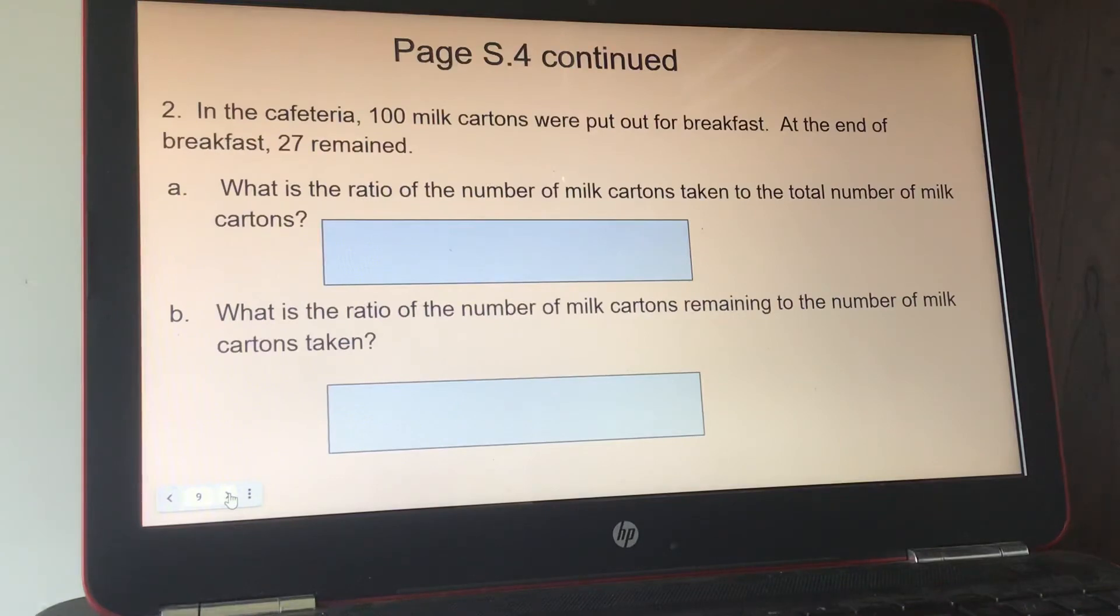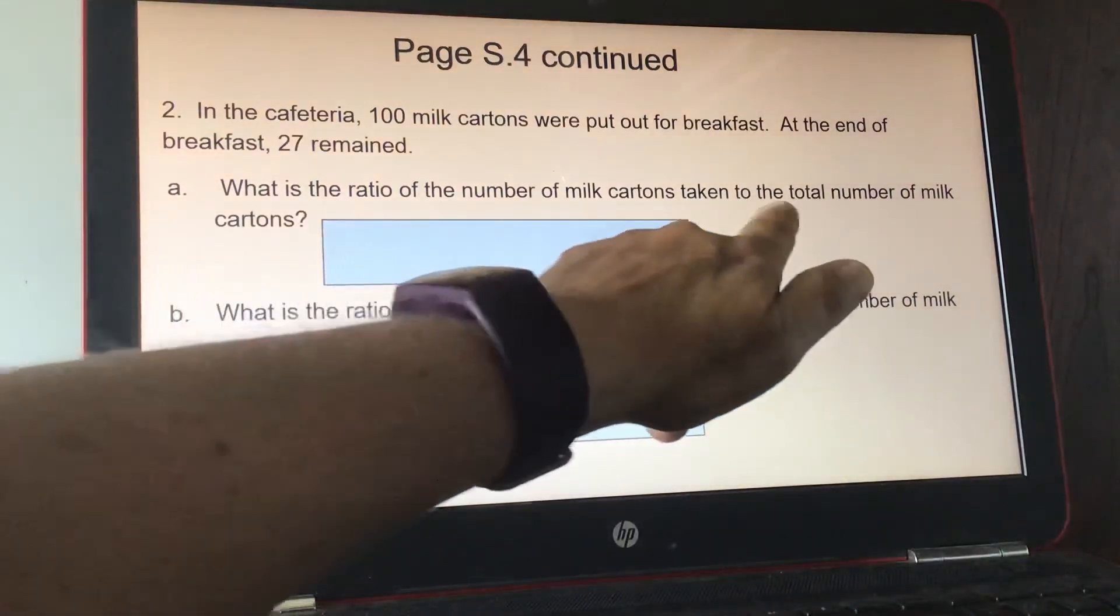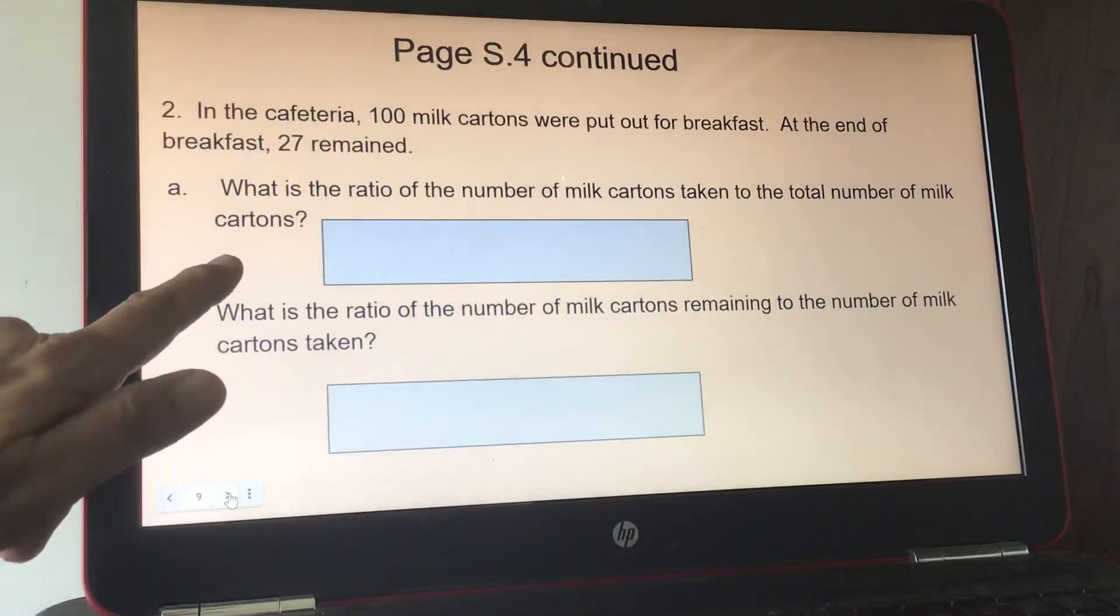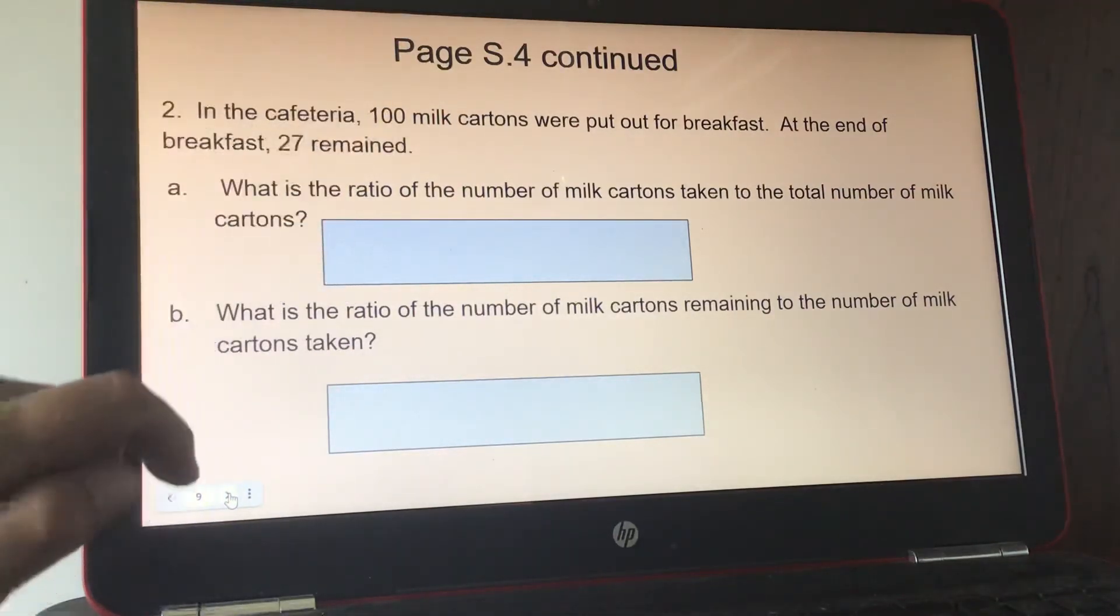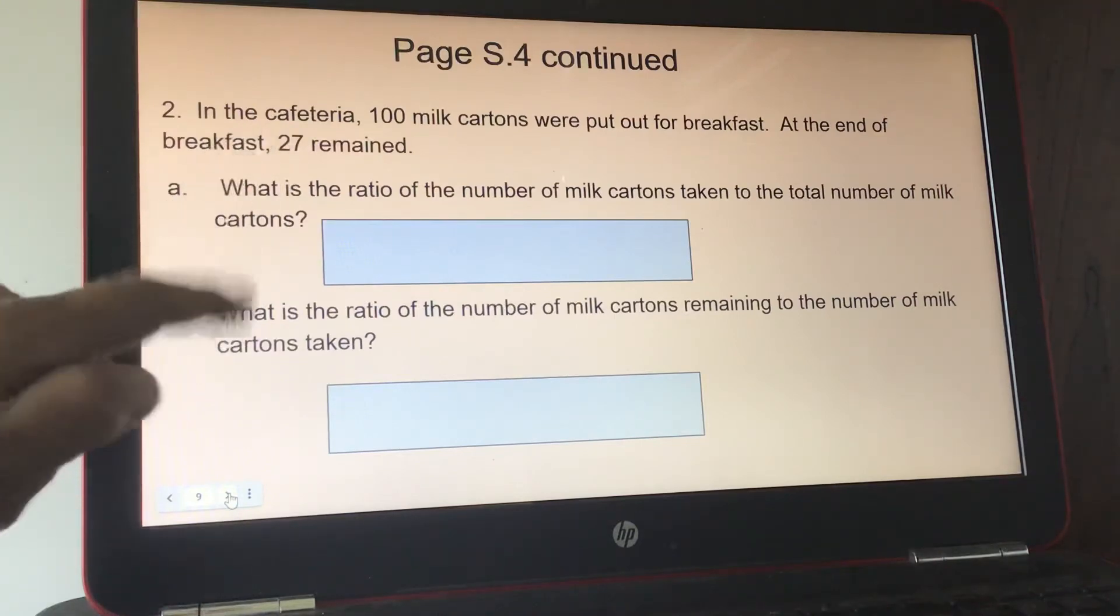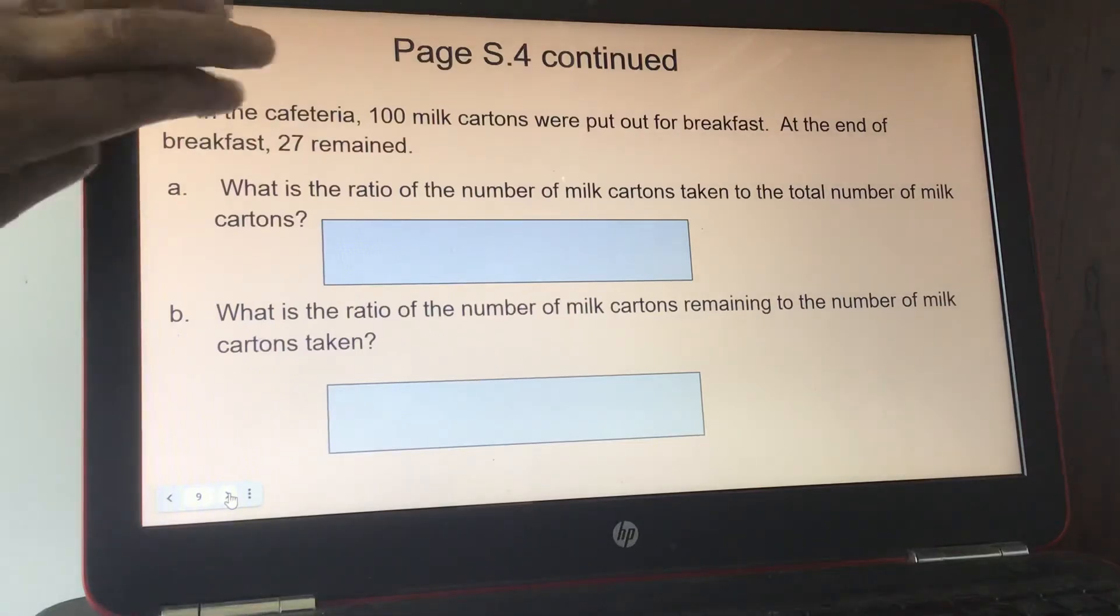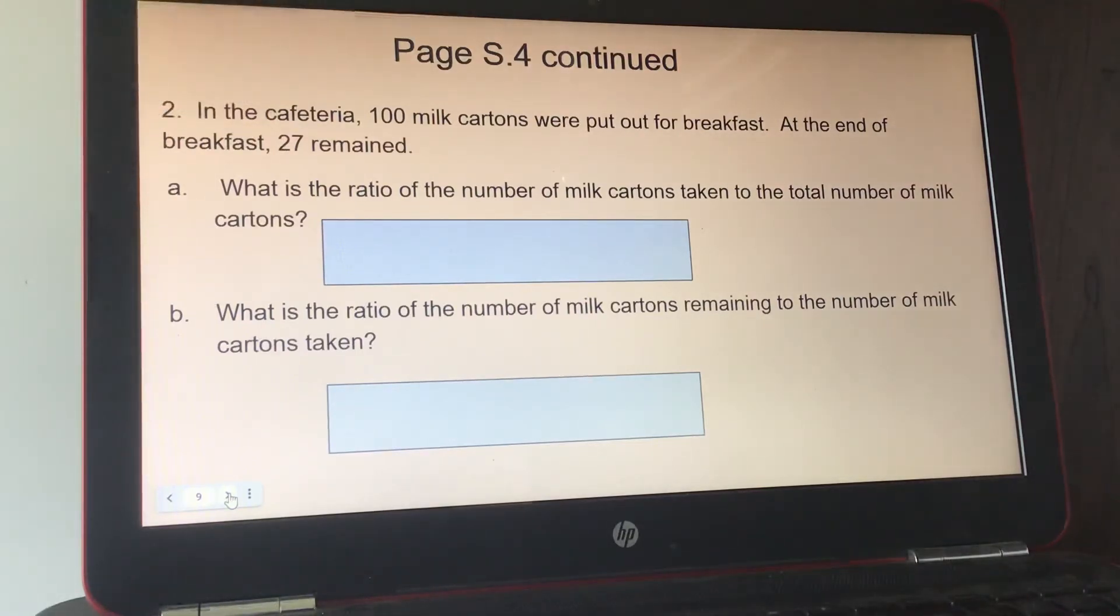And number 2, in the cafeteria, 100 milk cartons were put out for breakfast. At the end of breakfast, 27 remained. So it asks you, what is the ratio of the number of milk cartons taken to the total number of milk cartons? So you have the total number of milk cartons, and they told you what was left, but they didn't tell you how many were taken. So you have to do a math problem. First, you have to subtract 27 from 100 to find out how many were taken first. And then you could do your ratio for it.